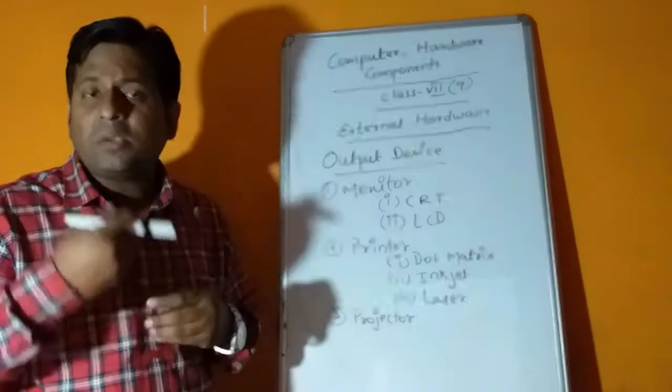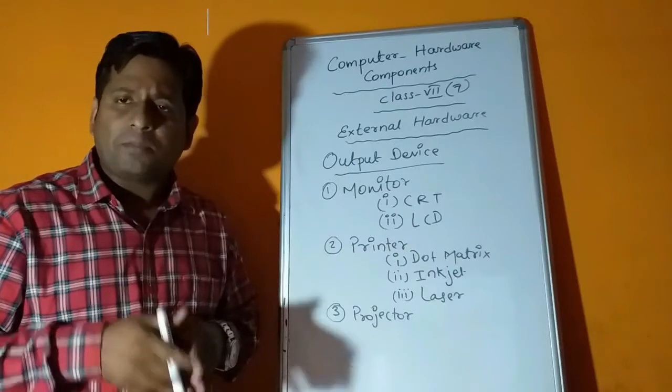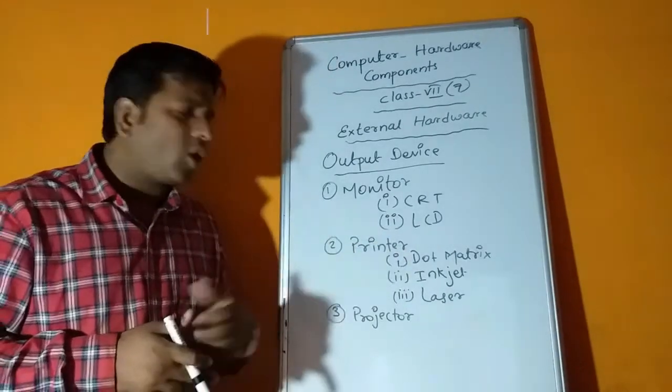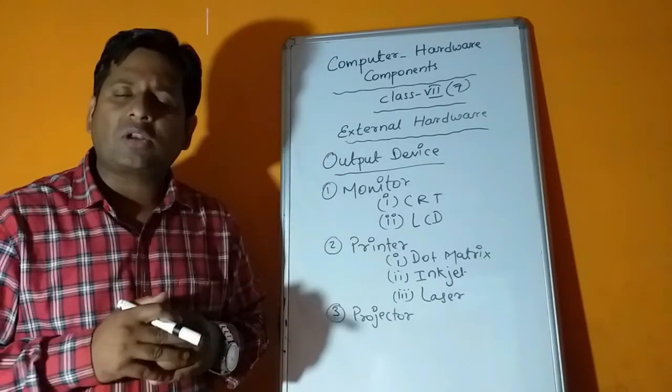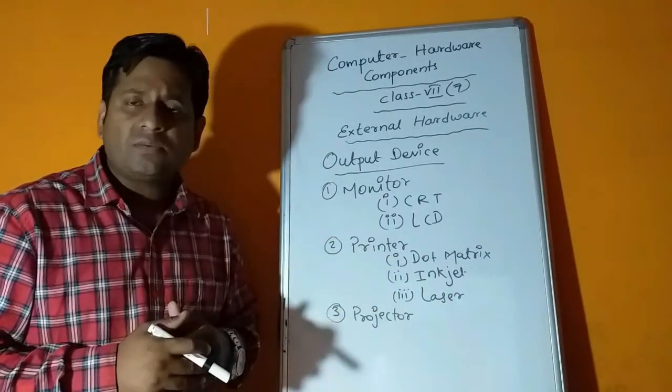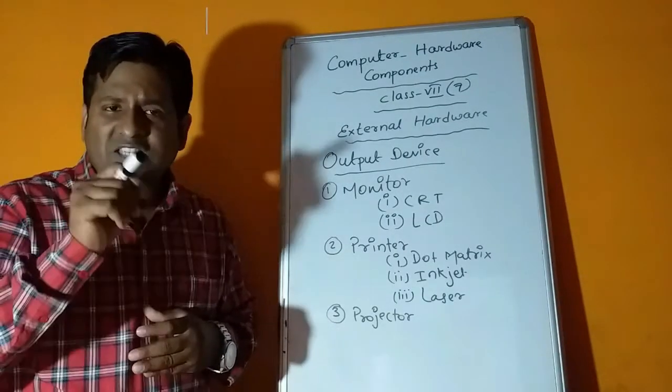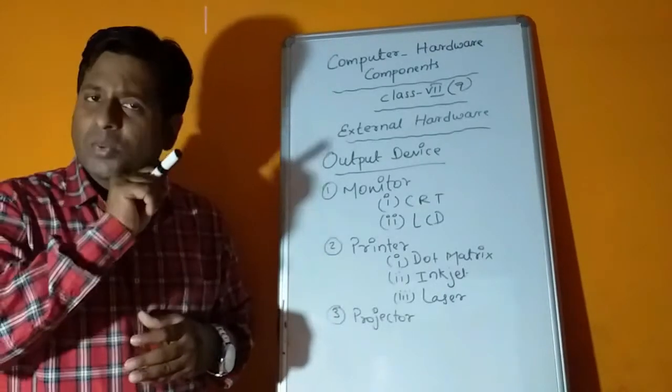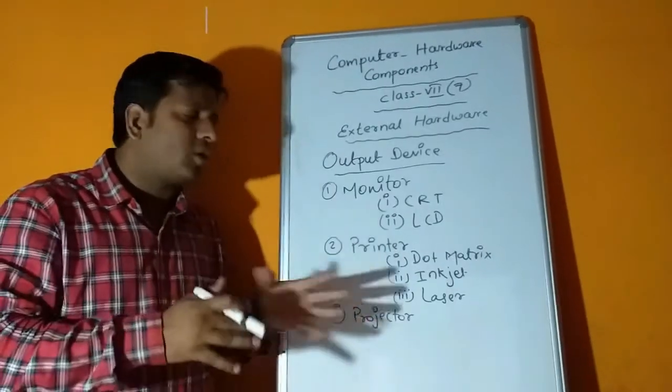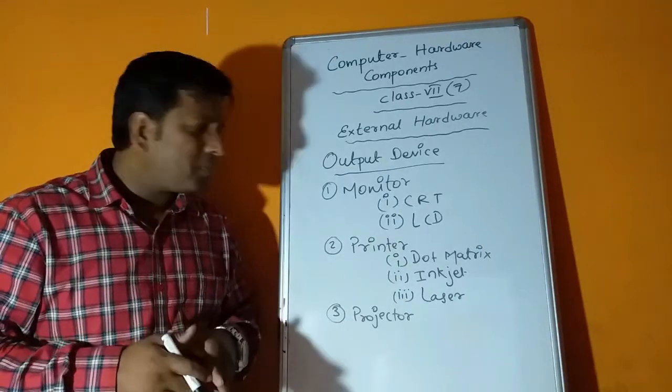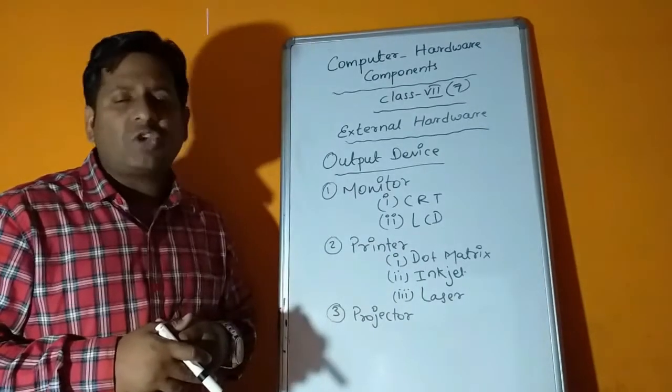Next to monitor we have printer. Printer is also an output device. It gives output as hard copy, in printed form on a piece of paper. These printers are categorized in three different types. The most common one is dot matrix. It's in dotted form. The text appears in dotted form. If you go to railway ticket counter they will give you bills in dotted form. Dot matrix is not used for image printing.